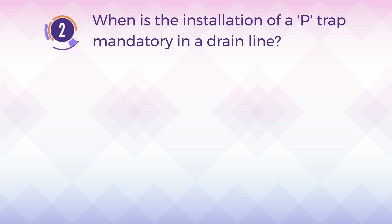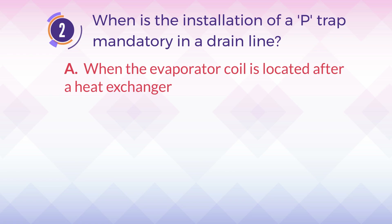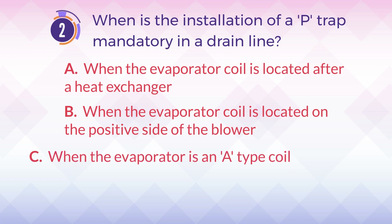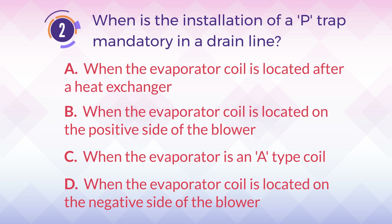Number 2. When is the installation of a P-trap mandatory in a drain line? A. When the evaporator coil is located after a heat exchanger. B. When the evaporator coil is located on the positive side of the blower. C. When the evaporator is an A-type coil. D. When the evaporator coil is located on the negative side of the blower.